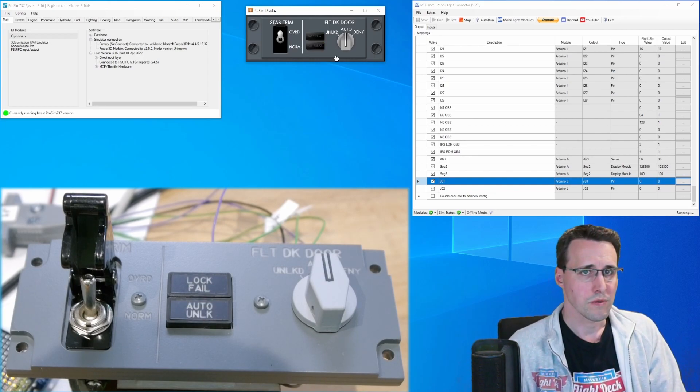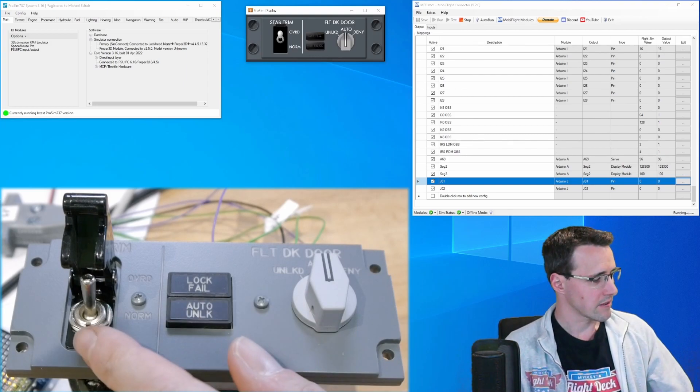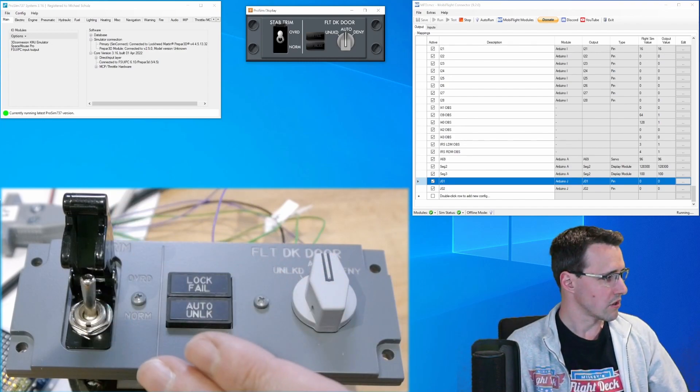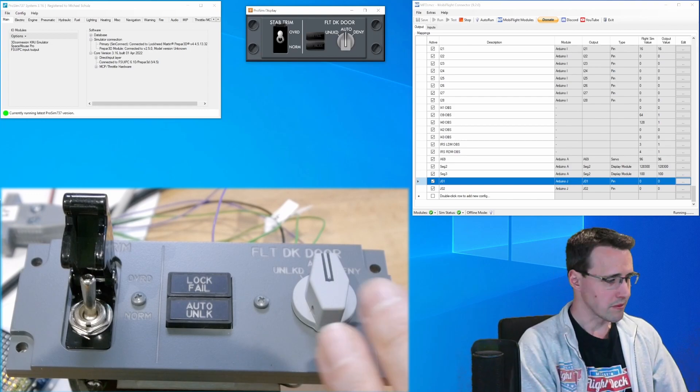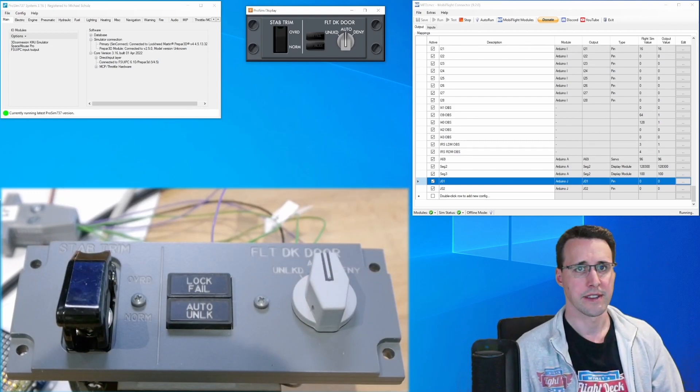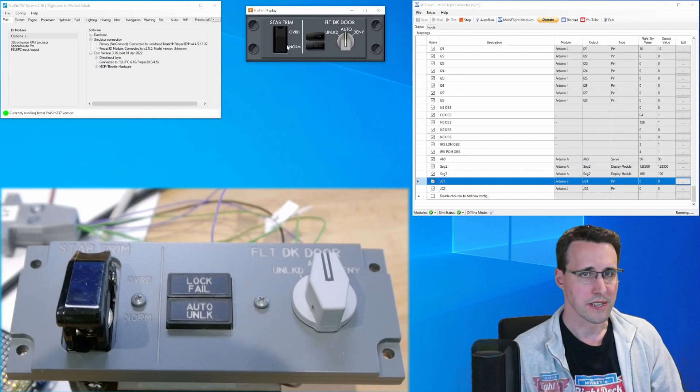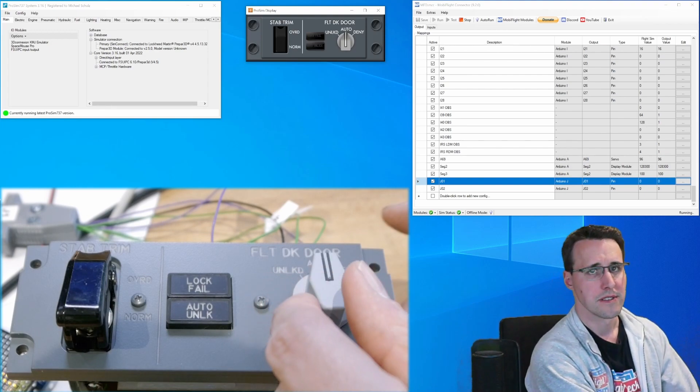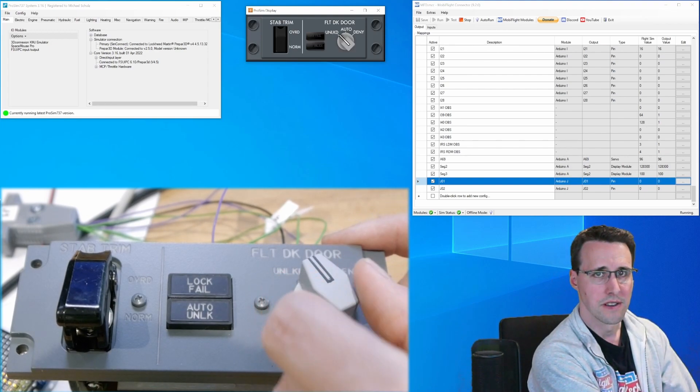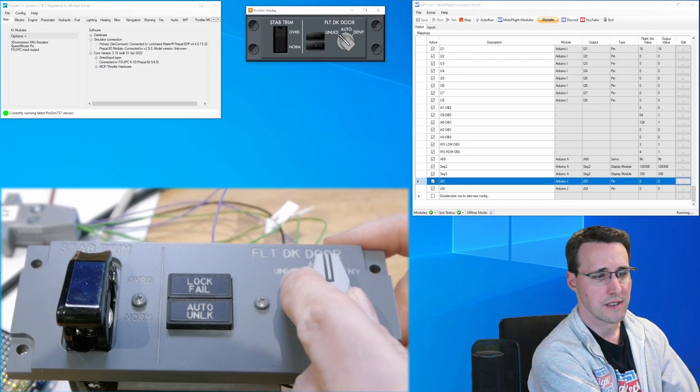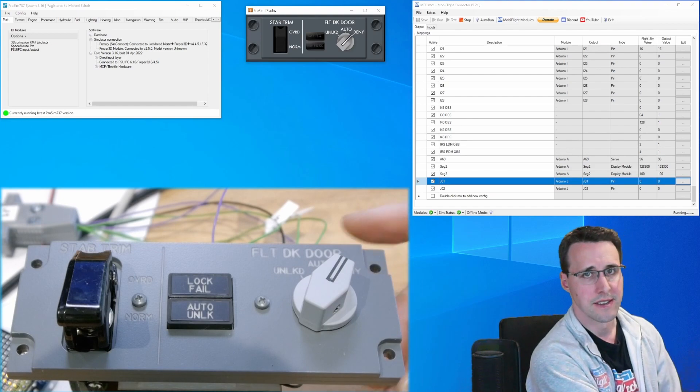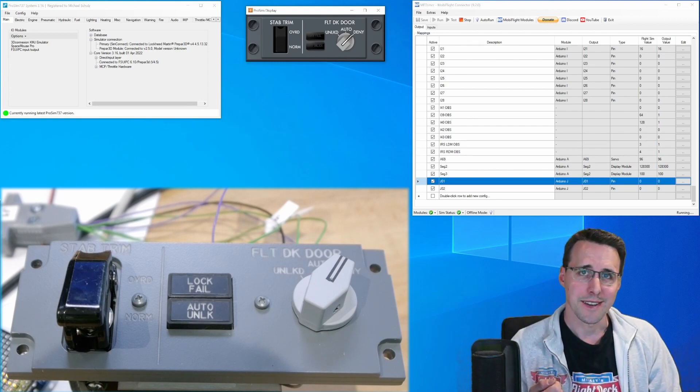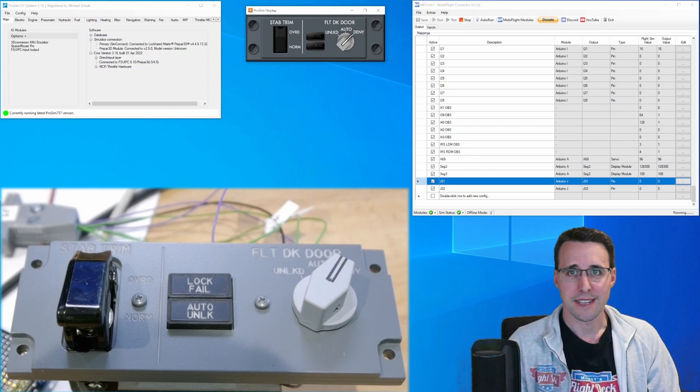Now the switches here, you can see the stabilizer trim switch is opened and the switch is in the override position. And when we close the guard, then it should go to the normal position. And so does the switch here in our software and now let's test the Flytec door. It is on auto and go to unlock. There we are, unlock, auto again and deny works too. So the panel is working and we finally can install our first panels into the pedestal box.